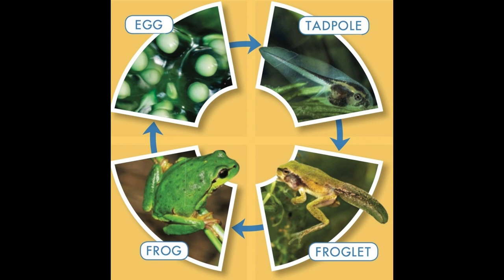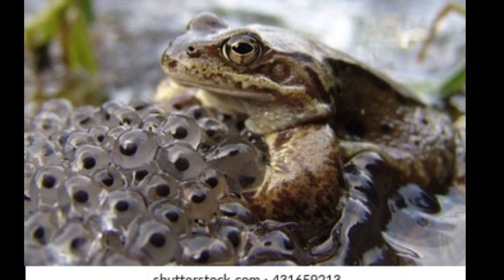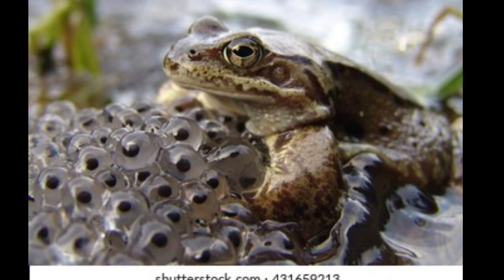In a process known as metamorphosis, during metamorphosis two hormones — prolactin and thyroxine — control the transformation from egg to larva to adult. So friends, this is a picture of an adult frog leaving eggs, so this is stage one of the frog.